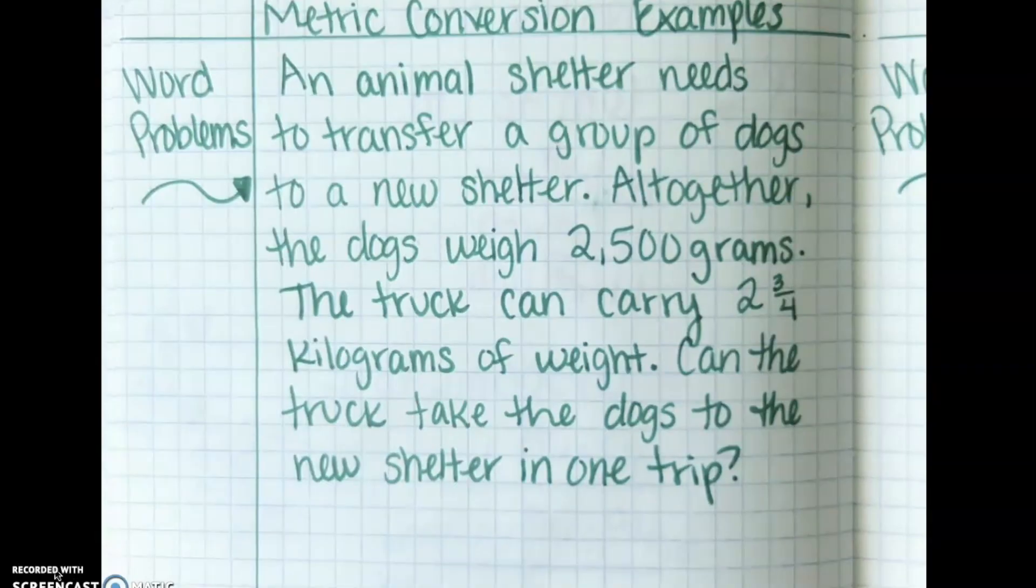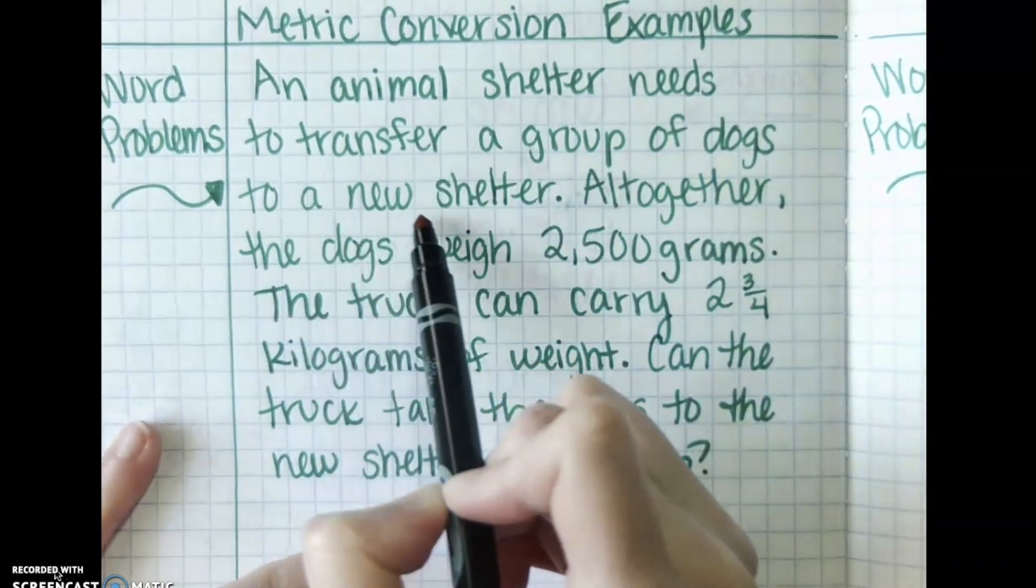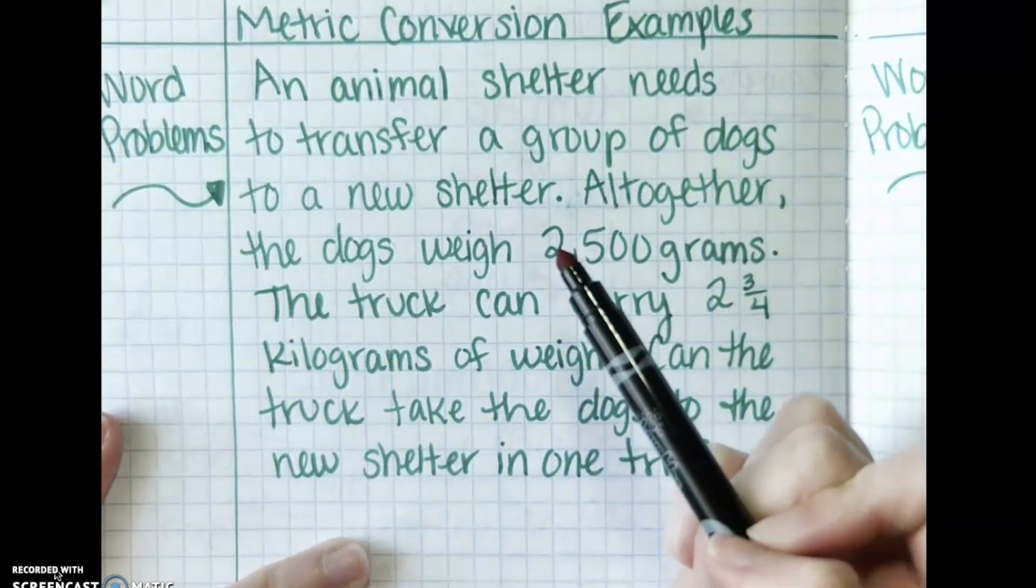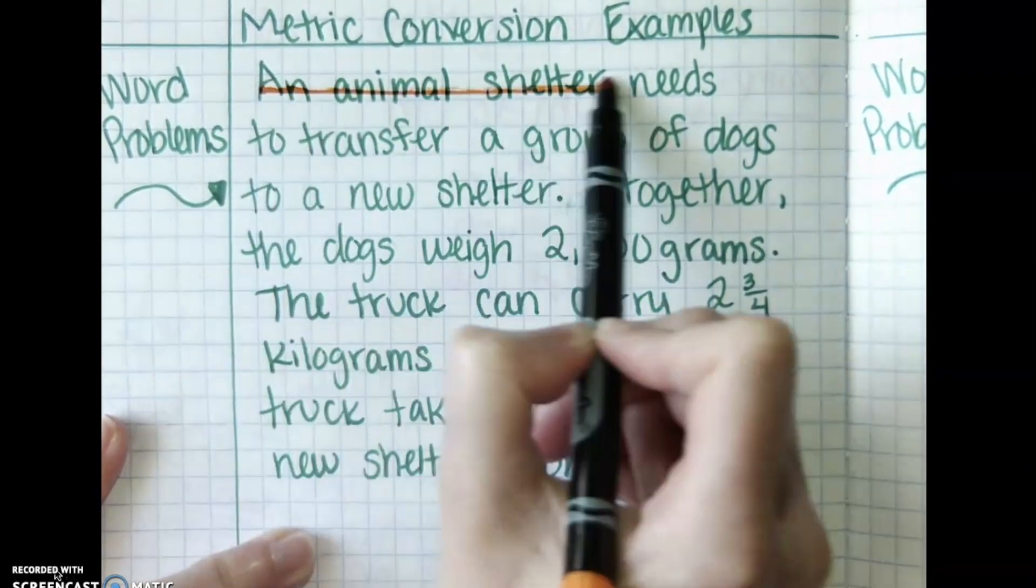Now that we're back from your pausing to figure it out, which I hope you did, we are going to work through this problem together and work on it. An animal shelter needs to transfer a group of dogs to a new shelter. That is good information to know. Now that I know what's going on, that's extra information.